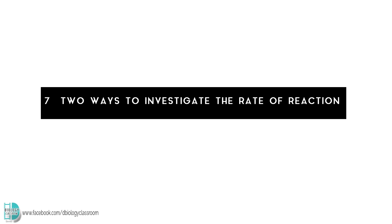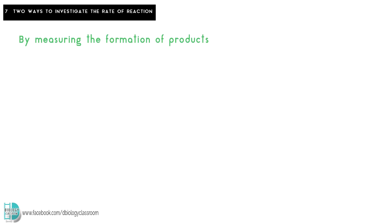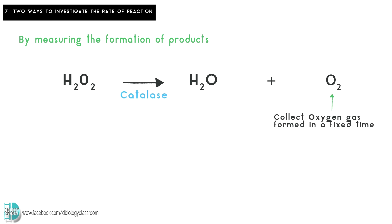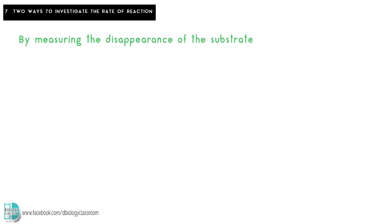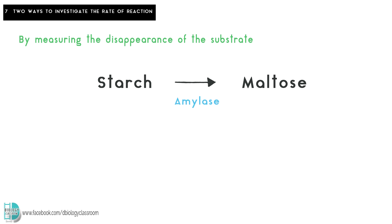Number 7, the progress of an enzyme-catalyzed reaction can be investigated in two ways. First, you can measure the rate of formation of products. For example, the rate of H₂O₂ decomposed by catalase can be calculated by collecting the oxygen formed over time. Secondly, you can measure the rate of disappearance of substrate. For example, the rate of amylase breakdown of starch can be calculated by measuring the time taken for starch to disappear using an iodine solution.